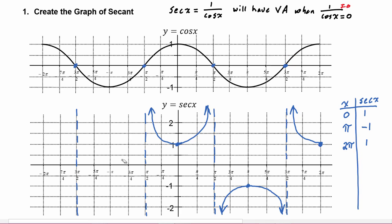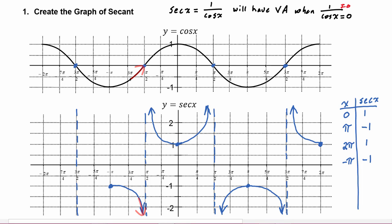Over on the negative side of the graph, if we plug in negative pi, we know negative pi is coterminal with pi on the unit circle, so the secant is going to be negative one. When we look at the graph of cosine, its y values are going towards zero as the x values go towards negative pi over two. As the y values of cosine go to zero through negative numbers, secant will go to negative infinity.